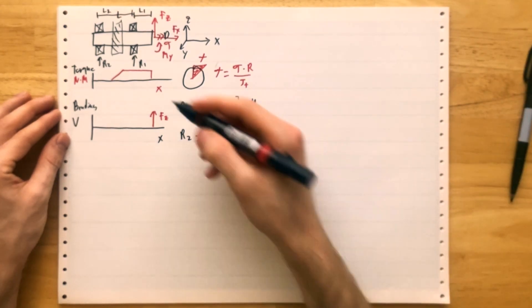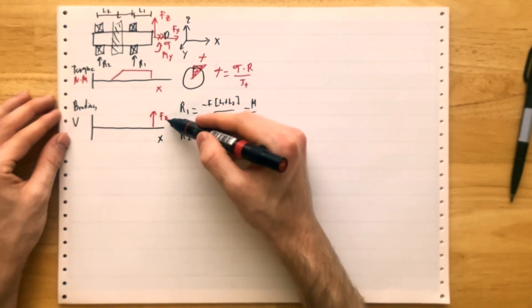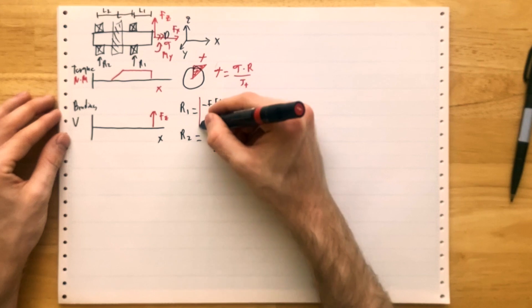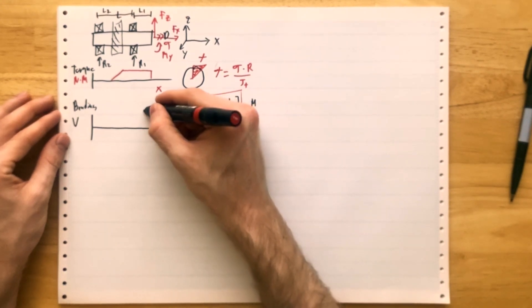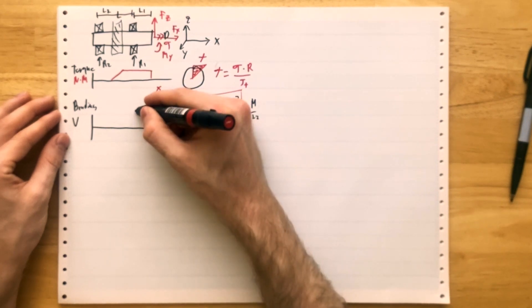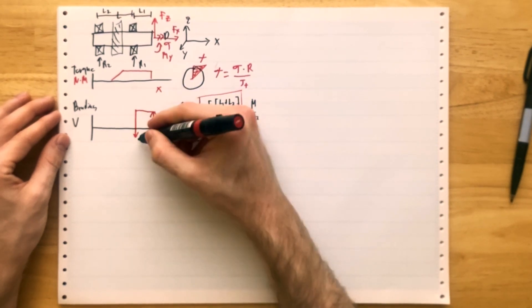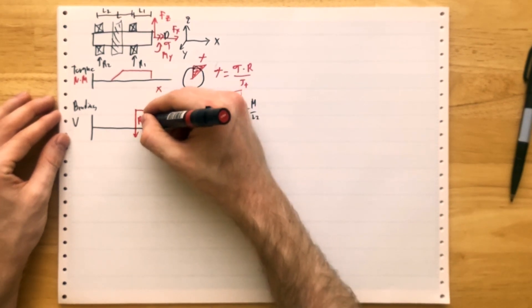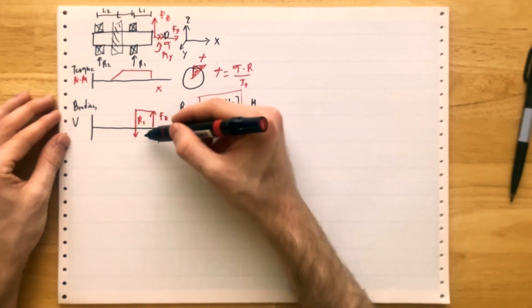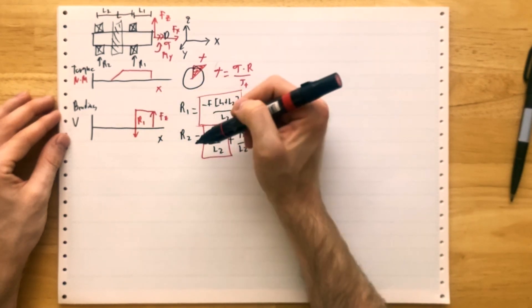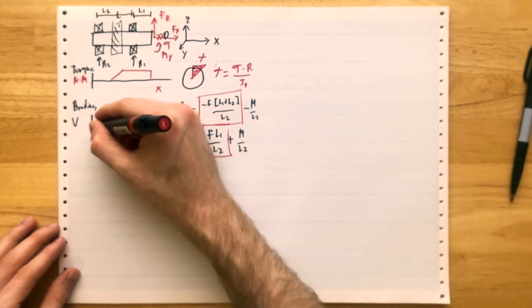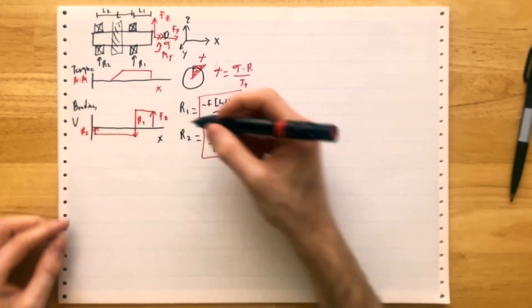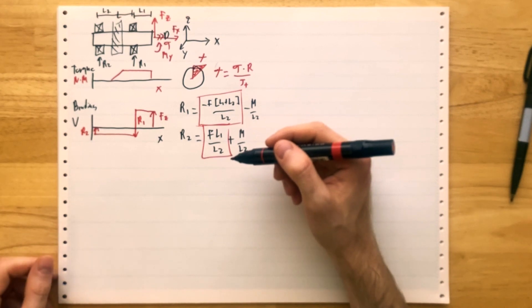So if we're looking at the shear, if we just consider the effect of Fz, we'll find that we move along, we hit that reaction force, that reaction force pushes us to negative, we're going down by R1, but it's still a less shear absolute than Fz. And then we go across, and we bump back up by R2, and then we get back to zero shear at the end of the bearing.